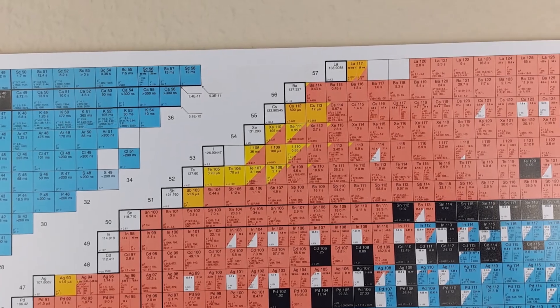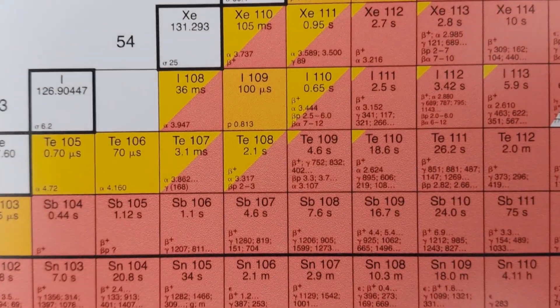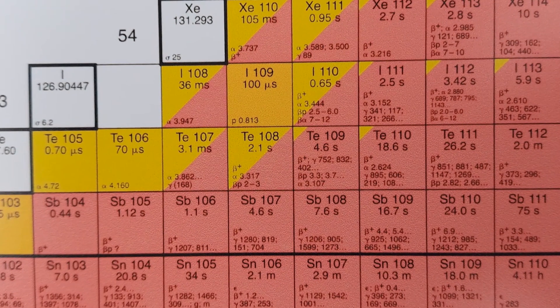Simple branching ratios between different decay modes. So sometimes tiles are not monochromatic. This means that the nucleus has several options to become more stable. Starting with a simple 50-50 for instance tellurium 108. It's both an alpha and a beta plus emitter.